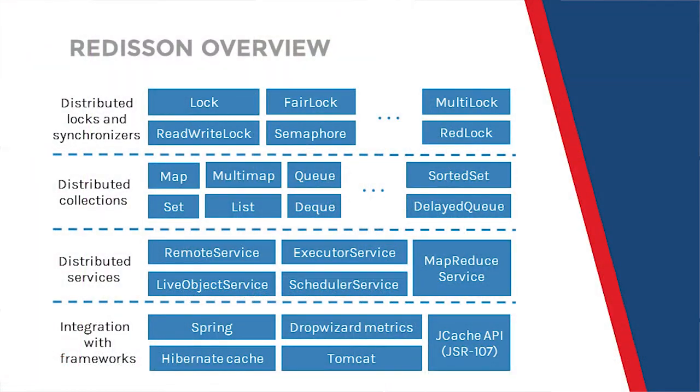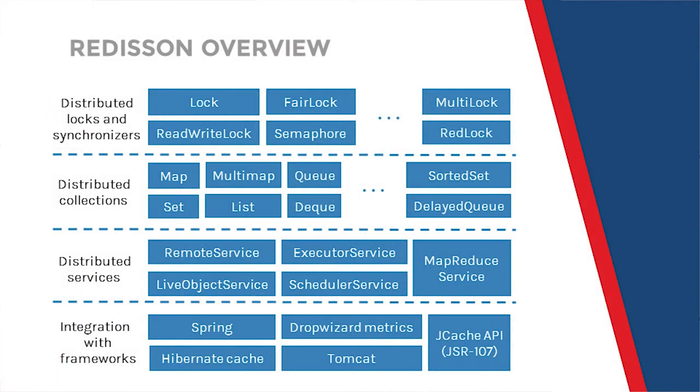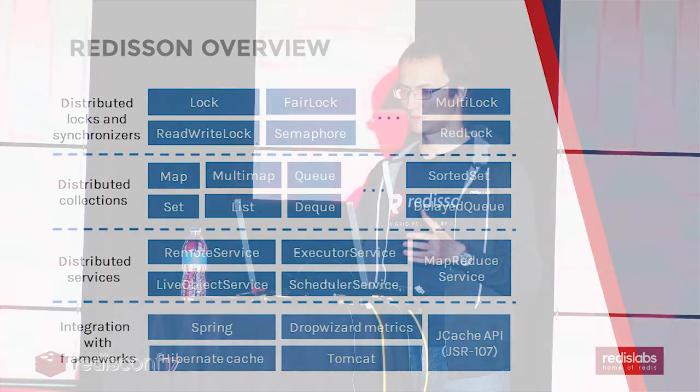So what is Redisson? It's a Redis-based in-memory data grid. It offers you all necessary things required to create distributed applications on Java. It offers different distributed locks and synchronizers, distributed collections. It even offers collections not implemented in Redis like multi-map, delayed queue, some priority queues. It offers distributed services. It has a lot of integrations with popular frameworks like Spring, Hibernate, Tomcat Session Manager. And it also implements the JCache API.